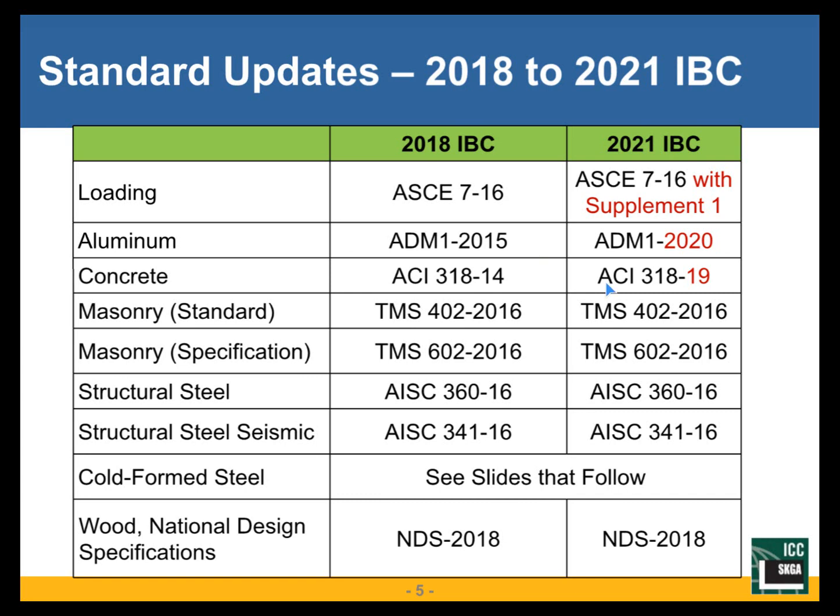The major standard update this time around is ACI 318-14 updated to ACI 318-19. So the concrete design and construction standard has been updated. The changes in ACI 318-19 are many, substantive, and some of them are of far-reaching consequence. We will devote a significant part of this five-part seminar series to ACI 318-19 changes.